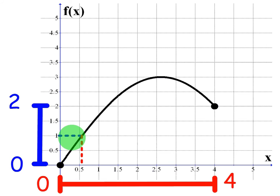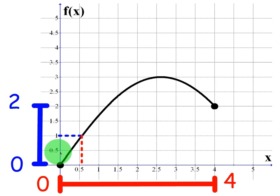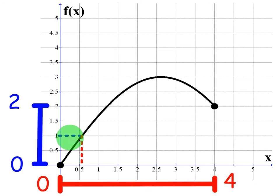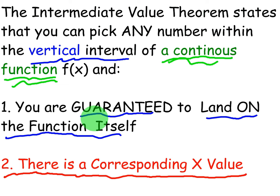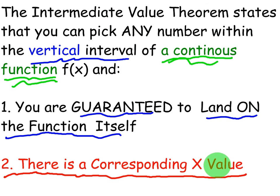So what does that mean? The Intermediate Value Theorem states that you can pick any number within the vertical interval — we could have picked 1.5 or 0.5 — of a continuous function, and you are guaranteed to land on the function itself. That's the first guarantee. As long as you draw a line over this way, you will hit the graph no matter what. And there will be a corresponding x-value. The second part is: once you go over, you can go down and guarantee that there will be an x-value corresponding to that point. That's the Intermediate Value Theorem, and it's actually pretty much common sense, especially when you look at the graph of the function.